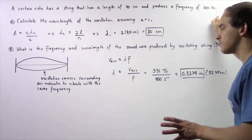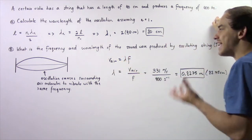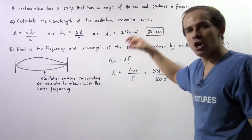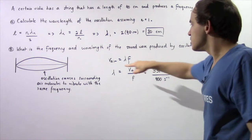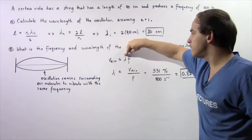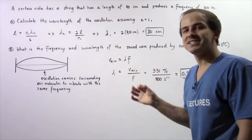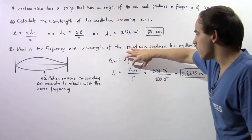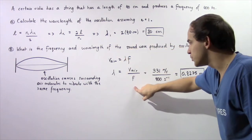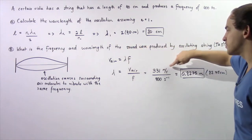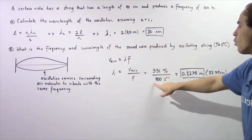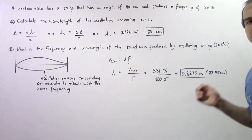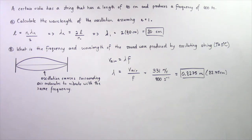Now, what about the wavelength? Recall that the velocity of a sound wave in air at 0 degrees Celsius is 331 meters per second. We can use the equation: wavelength equals velocity divided by frequency. So the wavelength of the sound wave in the surrounding air equals 331 meters per second divided by 400 Hertz, giving us 0.8275 meters, or equivalently 82.75 centimeters.